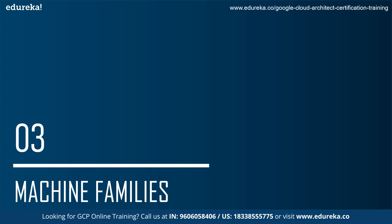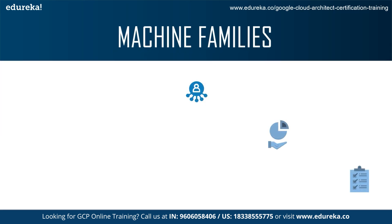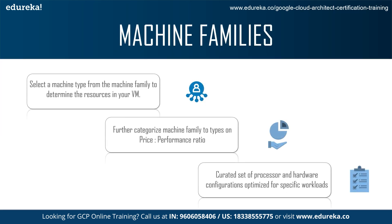Next we come to machine families. A machine family is a curated set of processor and hardware configurations optimized for specific workloads. When talking about Google Cloud Platform VM instances, there are various different machine instances provided because of the different machine families they belong to. For example, there are machine families such as N1, N2D, and N2 available, and each is optimized separately for a separate workload with pricing based on that as well.